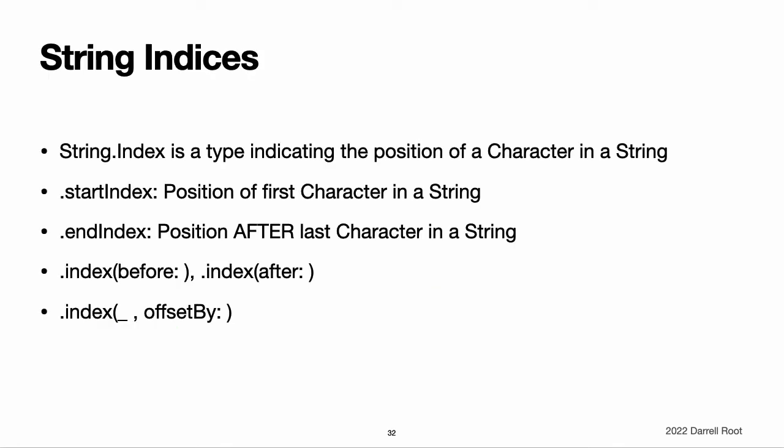Accessing and modifying a string. You can access and modify a string through its methods and properties or by using subscript syntax. String indices. Each string value has an associated index type, String.Index, which corresponds to the position of each character in the string. As mentioned above, different characters can require different amounts of memory to store. So in order to determine which character is at a particular position, you must iterate over each Unicode scalar from the start or end of that string. For this reason, Swift strings cannot be indexed by integer values.